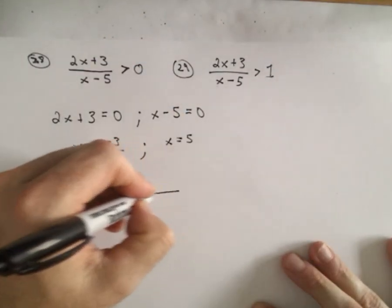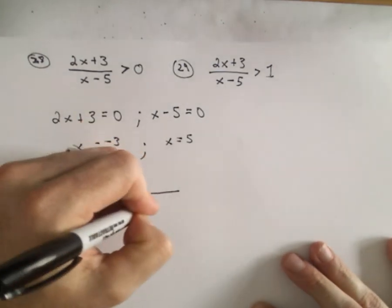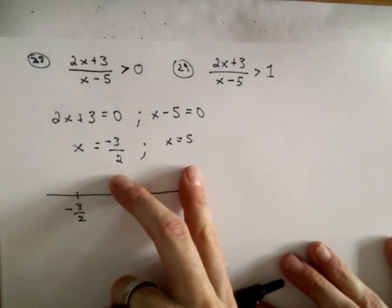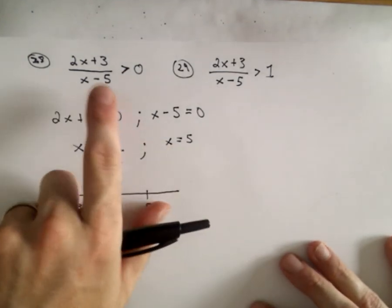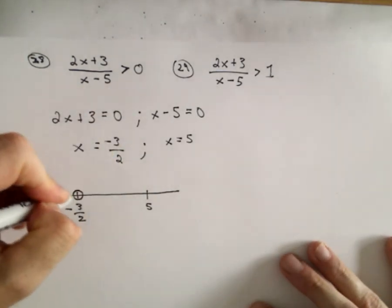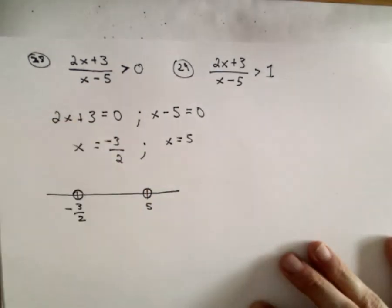So this is where we make our number line. So there's negative 3 halves, there's positive 5. Again, I know that neither of these values will be a solution to my original inequality because negative 3 halves gives me 0. 0 is not greater than 0. And if we put 5 in, it's undefined. So that definitely doesn't work.